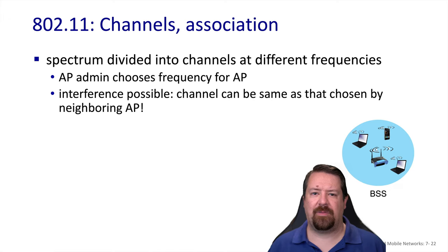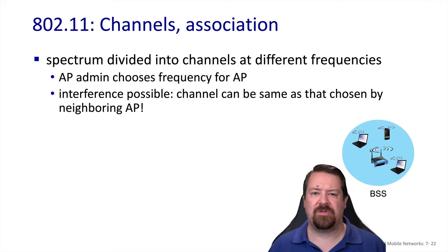Each of the available bands — 2.4 GHz and 5 GHz — have multiple channels available. Part of configuring an access point is choosing which channel within that band it should operate on. If two access points in range of each other are configured on the same channel, they will interfere with one another. So it's important to survey the wireless environment and choose channels carefully so that neighboring access points do not conflict.